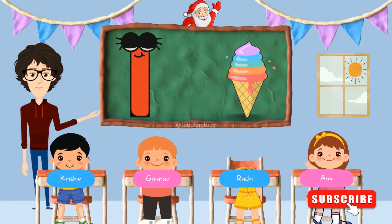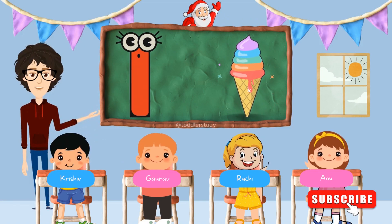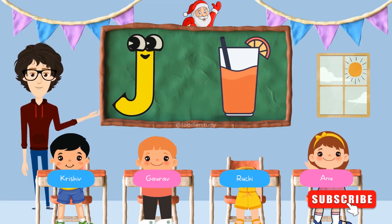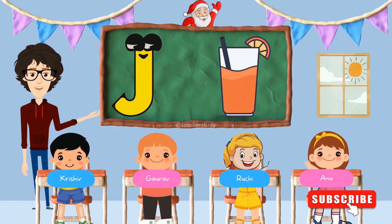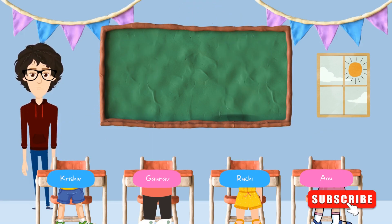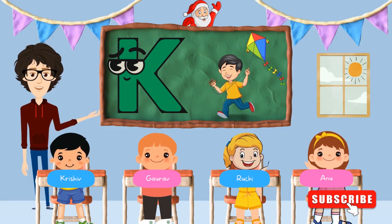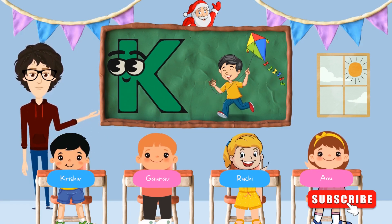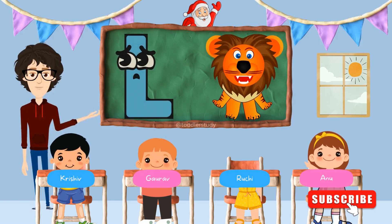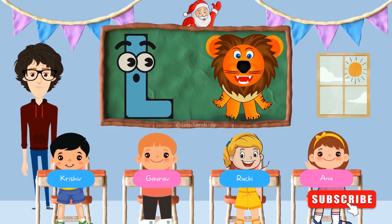I for Ice Cream. J for Juice. K for Kite. L for Lion.